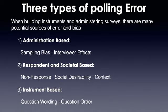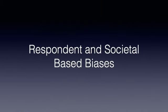The second type is instrument-based errors — errors the pollster makes when writing the survey instrument that create results very hard to interpret. There are three types of polling errors: first, administration-based errors introduced in the way the pollster gives and makes the survey available, which we covered last time with sampling bias and interviewer effects. Second, respondent and societal-based errors caused by non-response, social desirability, and survey context. Third, instrument-based errors from question wording and question order.